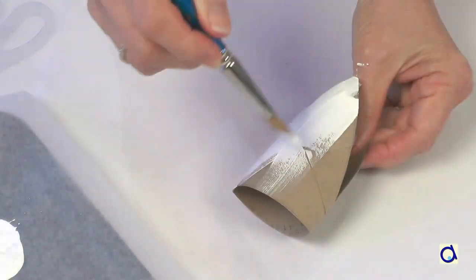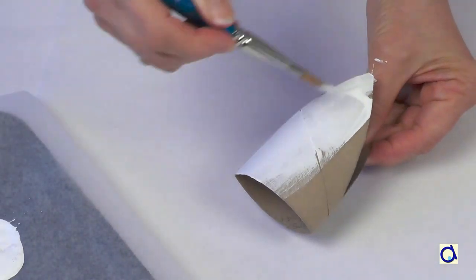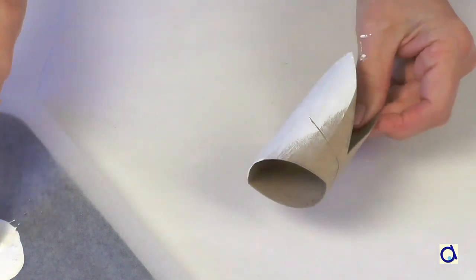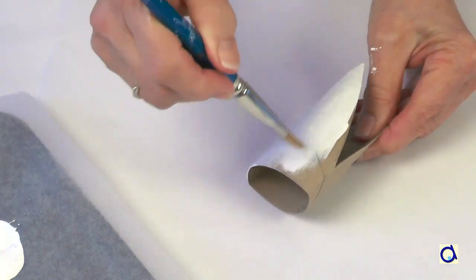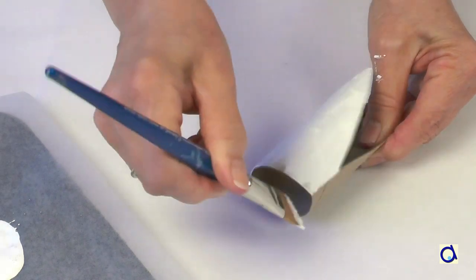If your toilet paper roll is brown like mine, start by painting it with white paint. The red paint is often transparent and the brown could appear through the red paint.